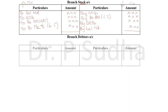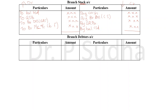The next account is branch debtors account. Branch debtors is also an asset. If the value of debtors increases, we debit it; if it decreases, we credit it. The opening balance of all assets is recorded in the debit side — to balance brought down. When the branch makes credit sales, the value of debtors increases, so credit sales are recorded in the debit side.